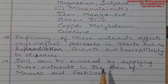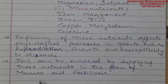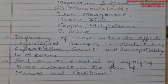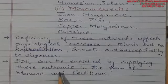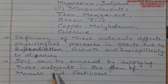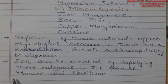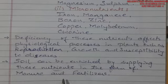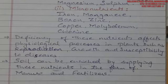The soil can be enriched by supplying these nutrients in the form of manure and fertilizer. These are the two methods by which the fertility of soil can be increased — manure being natural and fertilizer being artificial or synthesized.